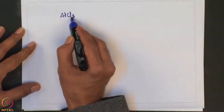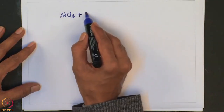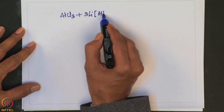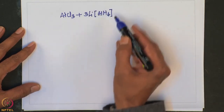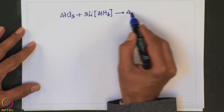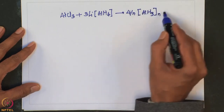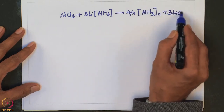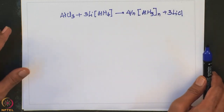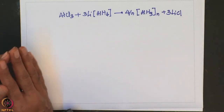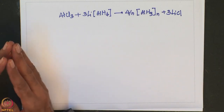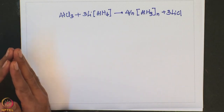Aluminum hydride can be prepared by reacting aluminum trichloride with lithium aluminum hydride in ether. AlCl3 plus lithium aluminum hydride gives aluminum hydride. This is how one can conveniently make aluminum hydride. However, the formation of etherate complexes because of electron deficiency complicates the synthesis.